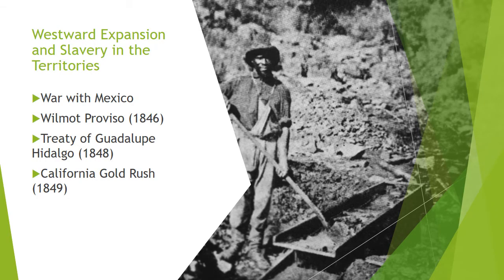The war with Mexico lasted from 1846 to 1848, and it was really a war that the United States started and wanted to happen. We had offered Mexico money for California; the Mexican government turned us down. Then President James K. Polk sent troops to a disputed area of southern Texas on the border with Mexico to provoke a fight, and that is how the war started. During the war, Pennsylvania Democratic representative David Wilmot introduced the Wilmot Proviso, which called for a ban on slavery in any territories acquired from Mexico, but the bill failed to pass in the Senate.